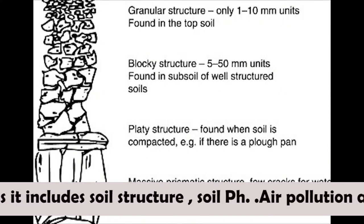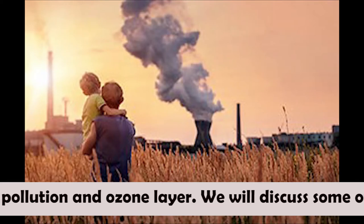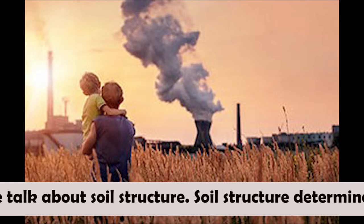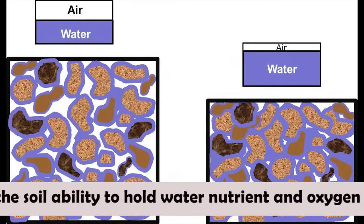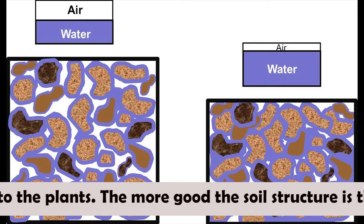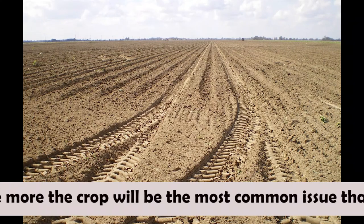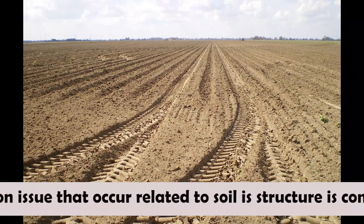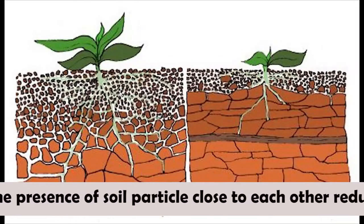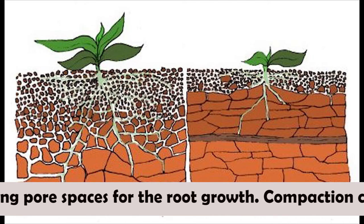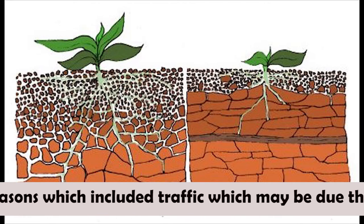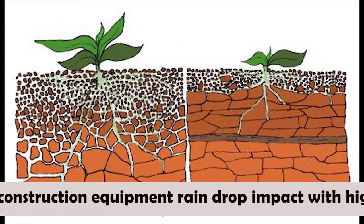The physiological disorders of ridge gourd include soil structure, soil pH, air pollution, and ozone layer issues. Regarding soil structure, it determines the soil's ability to hold water, nutrients, and oxygen and make them available to plants — the better the soil structure, the better the crop. The most common issue related to soil structure is compaction, which is the presence of soil particles close to each other, reducing pore spaces for root growth. Compaction can occur due to traffic from construction equipment, raindrop impact with high intensity, and tilling operations.